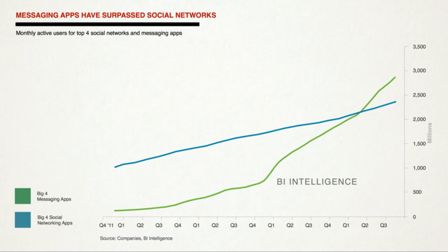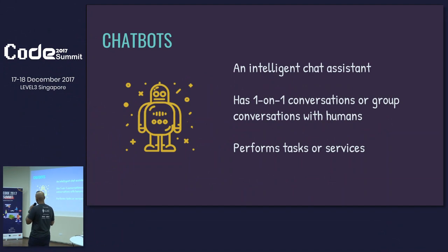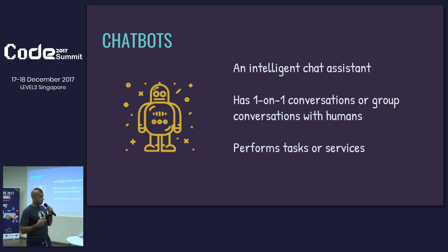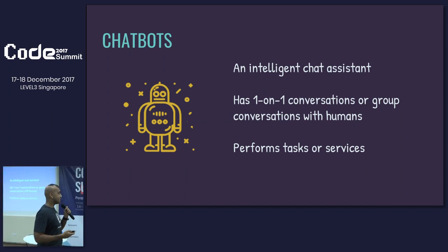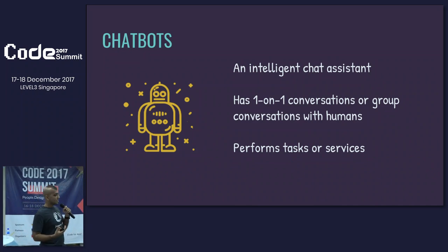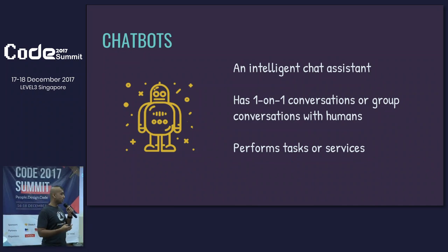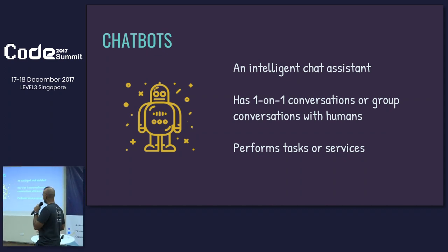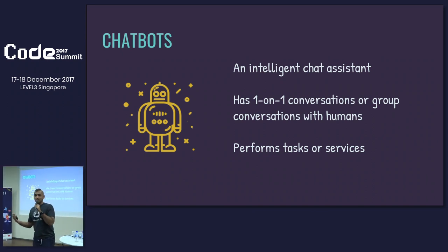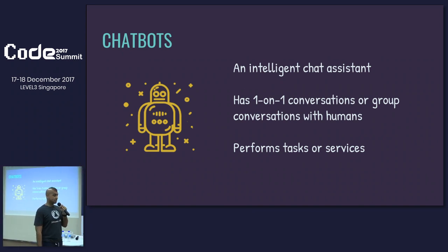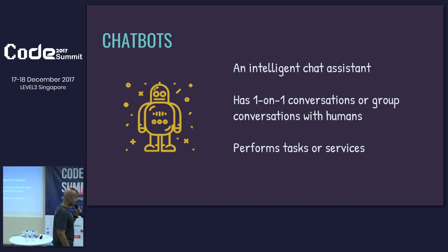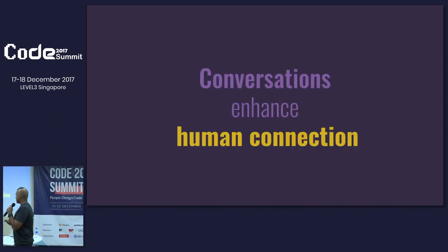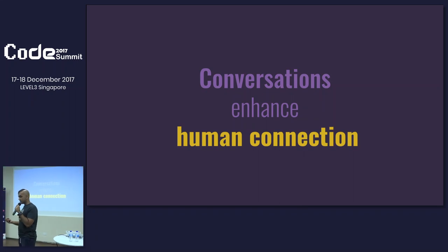So let me reintroduce what a chatbot is. A chatbot is an intelligent chat assistant that has one-on-one conversations with you, or can be put in group conversations to facilitate chat or negotiate for you. Chatbots perform tasks and services — they can connect to a backend, connect to APIs, do math. Simply put, they perform tasks and services.